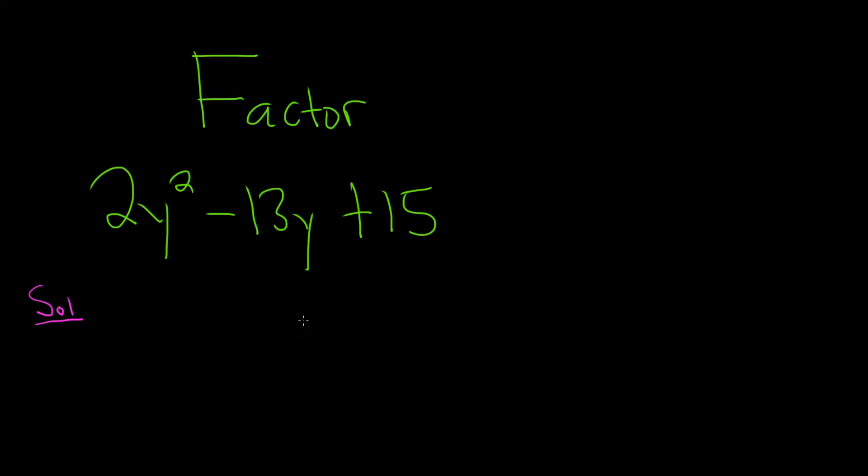If you can't factor with the AC method, people say this is called prime, which means you can't factor it using just real numbers. You can actually factor everything, by the way. It's just sometimes you have to involve complex numbers. So if this method fails, you just say it's prime and walk away.